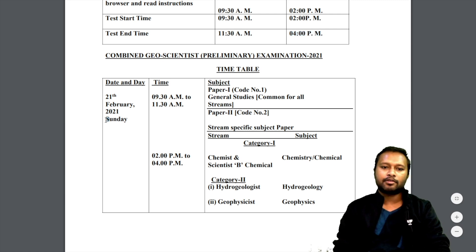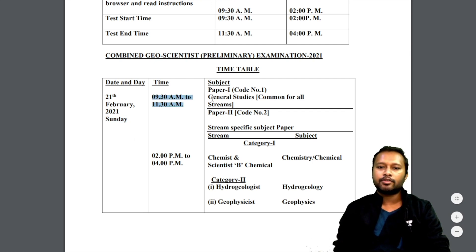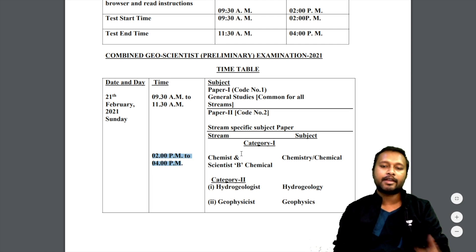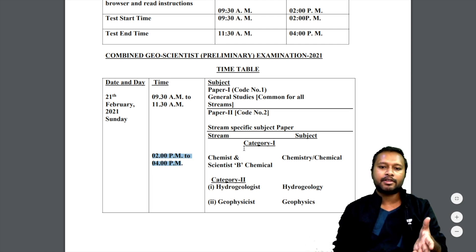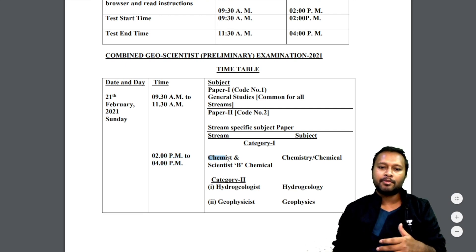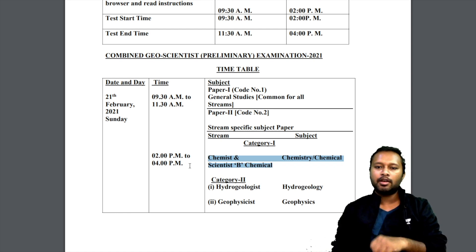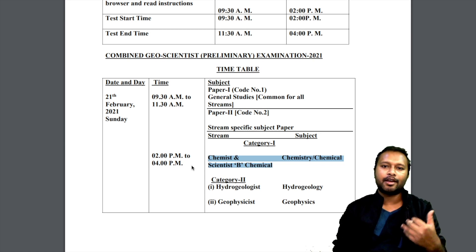The date of the exam is 21st of February, which is a Sunday. Paper 1 (paper code number one) runs from 9:30 AM to 11:30 AM — that is General Studies, which is common for all streams. Paper 2 (paper code number two) runs from 2:00 PM to 4:00 PM and is stream-specific. For example, if you filled for the chemistry stream, the Chemist and Geoscientist B Chemical exam is what you'll give in the afternoon session.